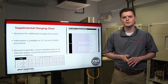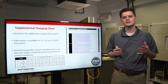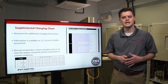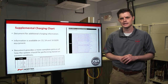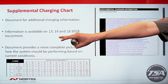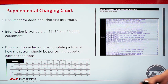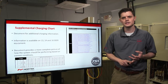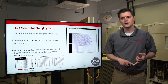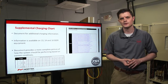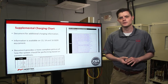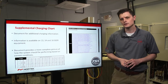The next document is our supplemental charging chart, a newer document developed to help guys charging in the field. It provides more charging information than what's found on the charging sticker on the back side of the condenser panel. This document covers our 13, 14, and 16-series equipment and provides a more complete picture of how the system should be performing based on its current conditions. It includes superheat, subcooling numbers, head pressure, and suction pressure numbers—because some guys want to know not just their superheat number, but what their suction and head pressure should be given their current conditions.